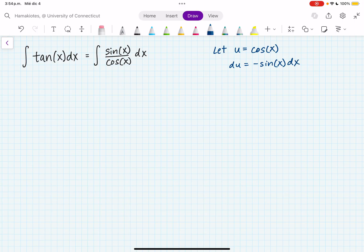So if we want to isolate dx, we can divide both sides by minus sine of x and get that du over minus sine of x equals dx.